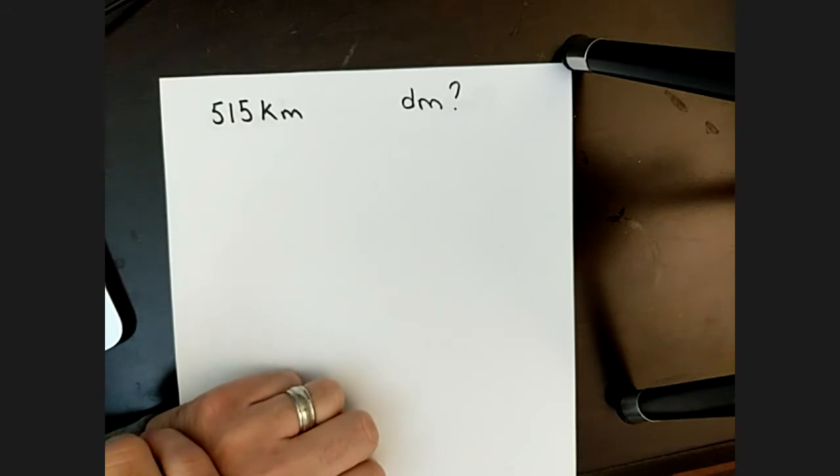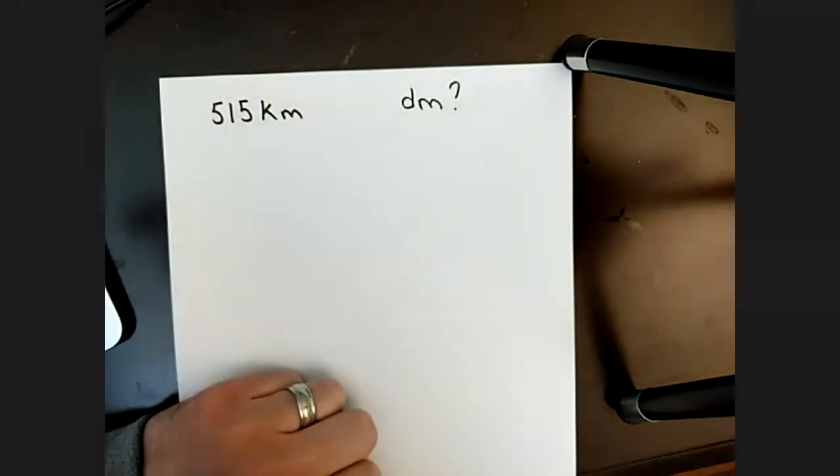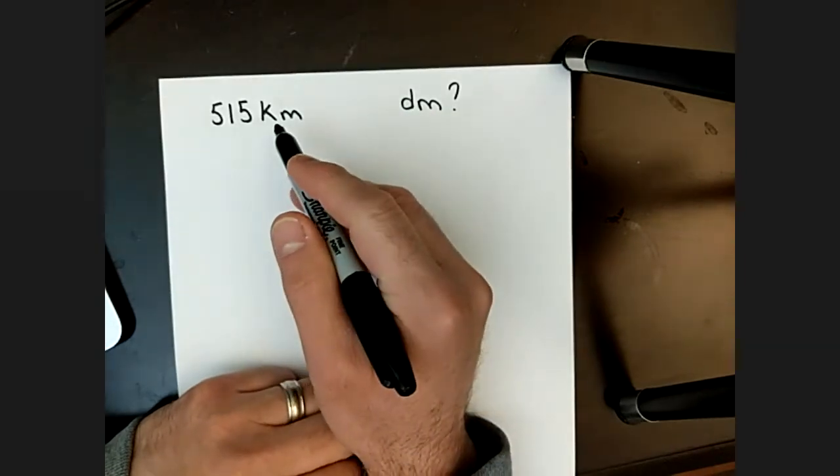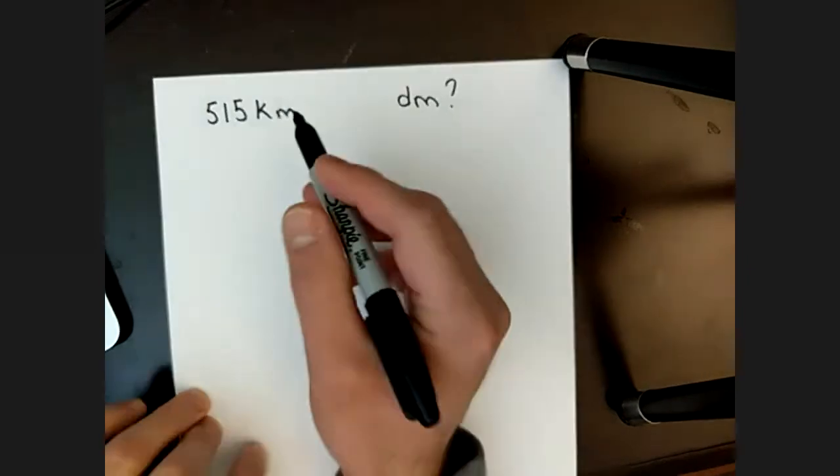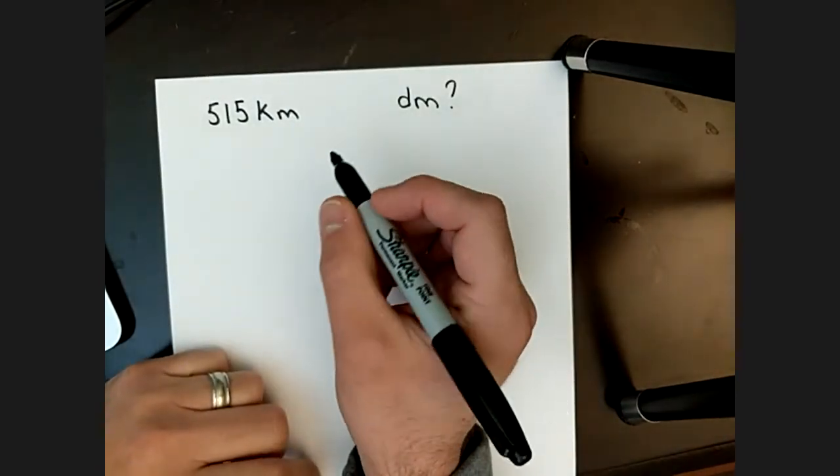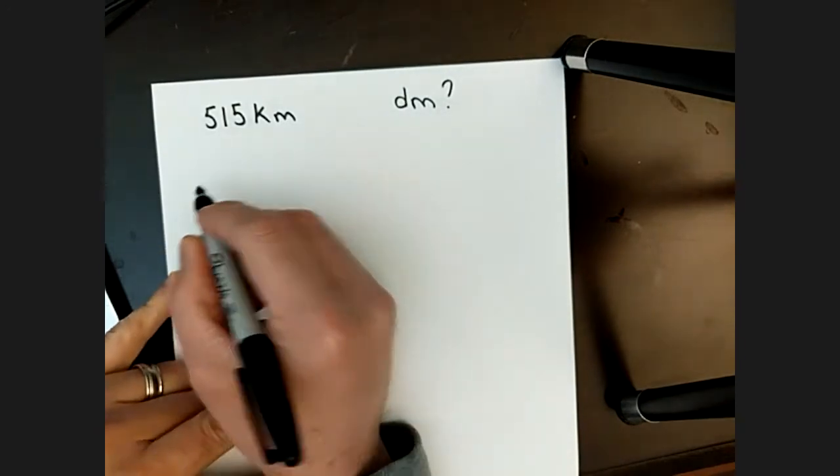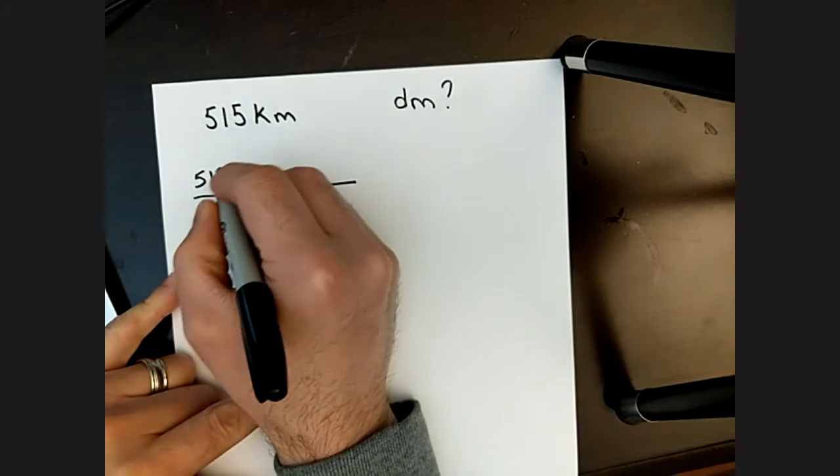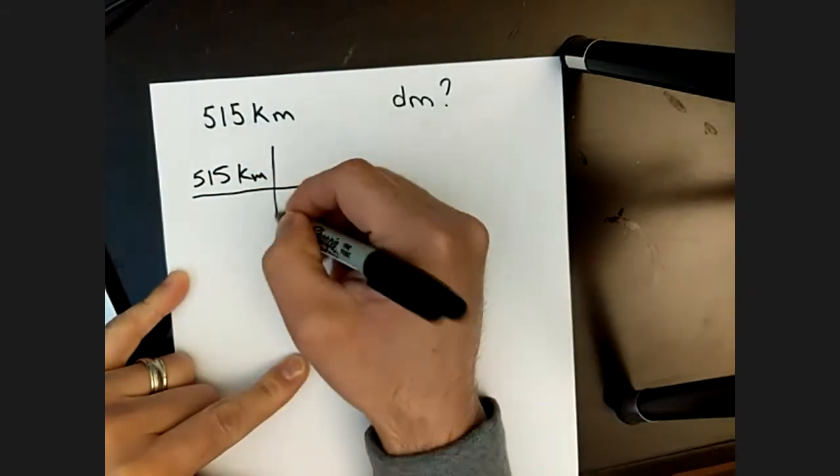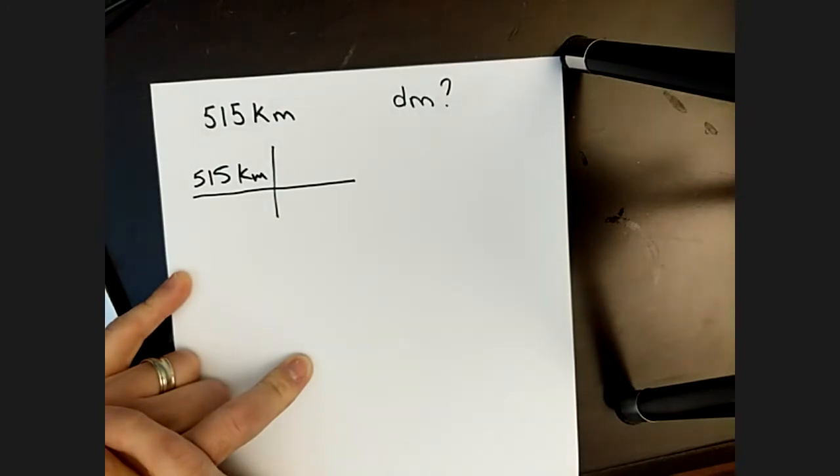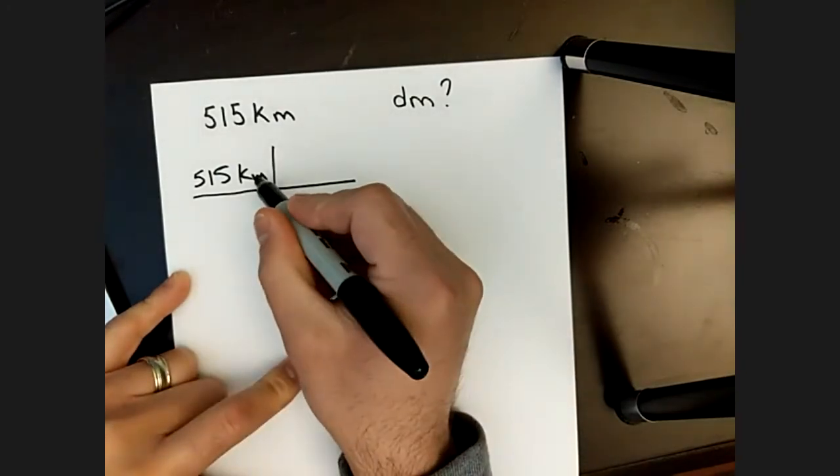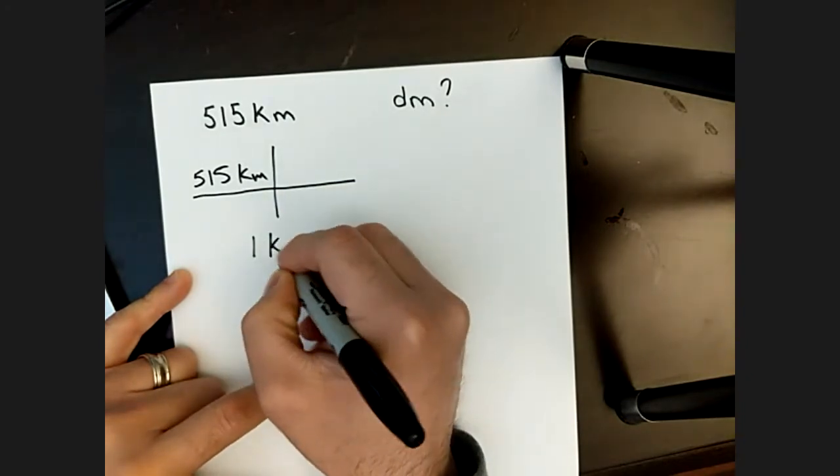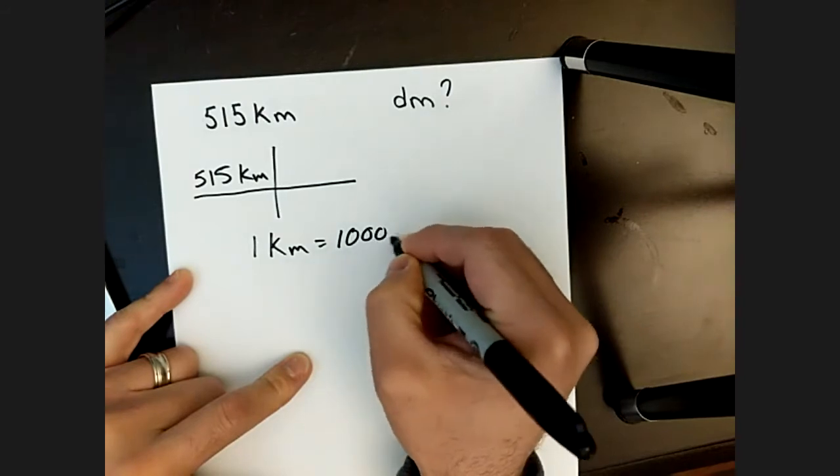Usually the way that I will extract this is there may not be a direct conversion from kilometers to decimeters, and so you may take this through more than one step. This particular unit analysis that you're going to see me do here is probably a little overkill for this particular kind of problem, but it works a little easier when we will look at the next couple of problems. So we want to convert the kilometers, but we don't have a direct conversion to the decimeter. But we do know that in one kilometer, there is a thousand meters.